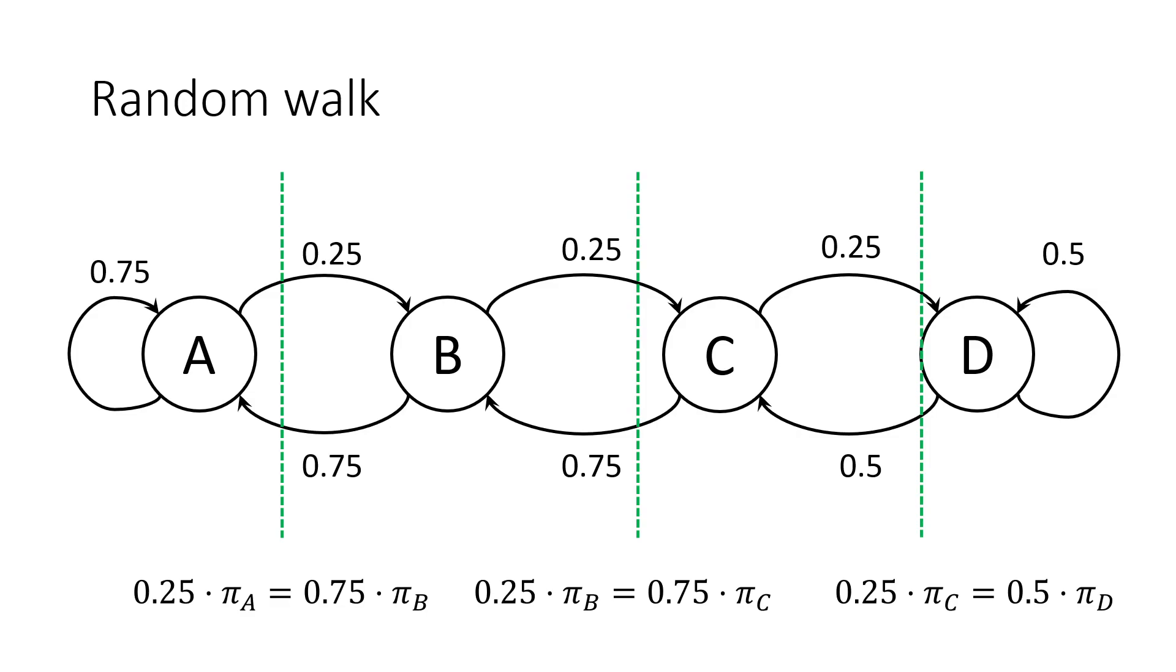This should make sense intuitively. In the long run, there should be an equal chance of being anywhere in the state space. The only differentiating factor is the ratio of these transition probabilities to one another.